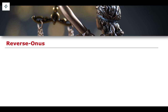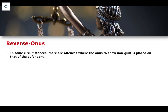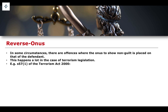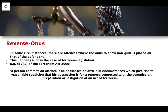In terms of reverse onus offences, there are actually some that exist. In some circumstances, there are offences where there is an onus placed on the defendant to show non-guilt. This is quite controversial and potentially discriminatory in many examples. It happens a lot in the case of terrorism legislation. If we look at the Terrorism Act 2000, specifically section 57, subsection 1, it states that a person commits an offence if they possess an article in circumstances which give rise to reasonable suspicion that their possession is for a purpose connected with the commission, preparation, or instigation of an act of terrorism.